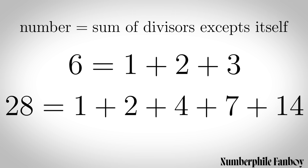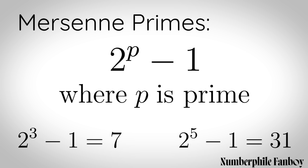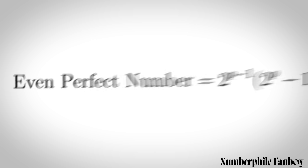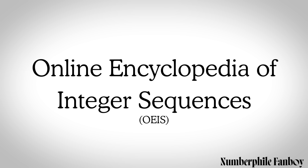A perfect number is an integer that equals the sum of its proper divisors, excluding itself. Mersenne primes are primes of the form two to the p minus one, where p is also prime — for example, two to the three minus one equals seven, or two to the five minus one equals 31. It turns out that every even perfect number can be written as two to the p minus one times a Mersenne prime.